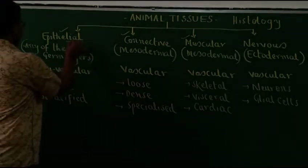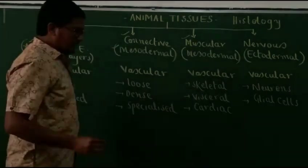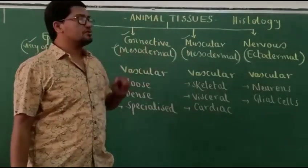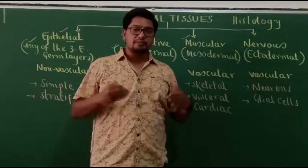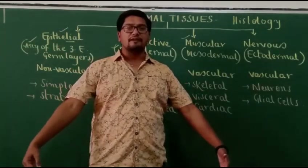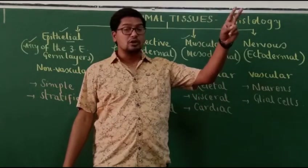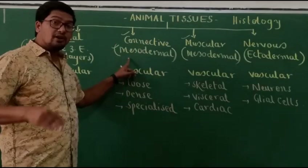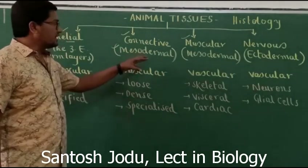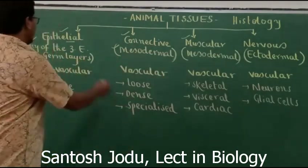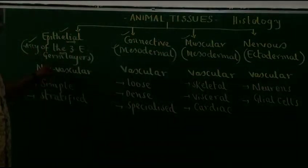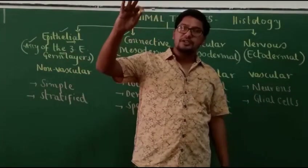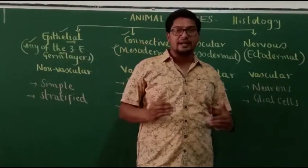Now let us look at the origin of each tissue. In the human body, all four tissues are present. We are triploblastic animals because our entire body is derived from three embryonic germ layers. During the process of development of an embryo, epithelial tissues can originate from any of the three embryonic germ layers — endoderm, mesoderm, or ectoderm.